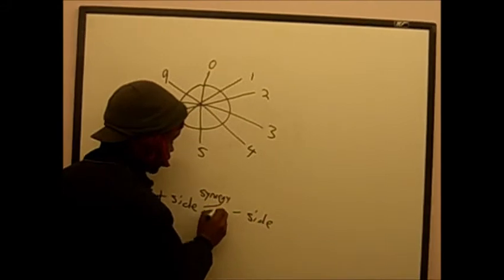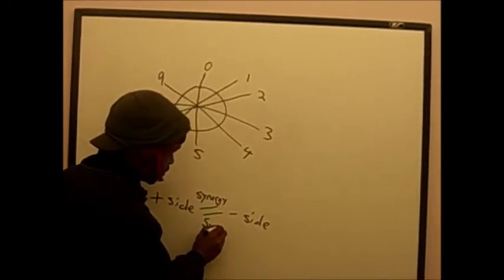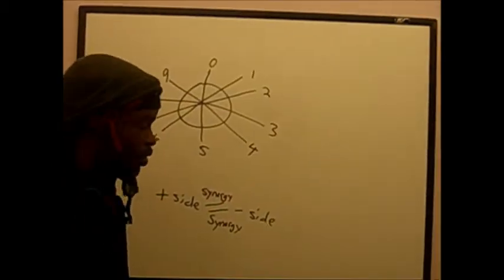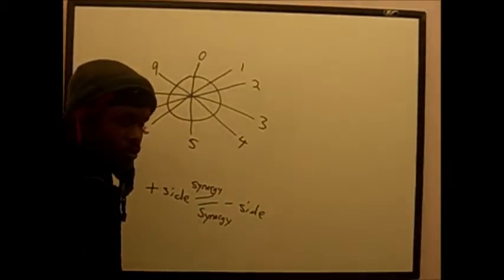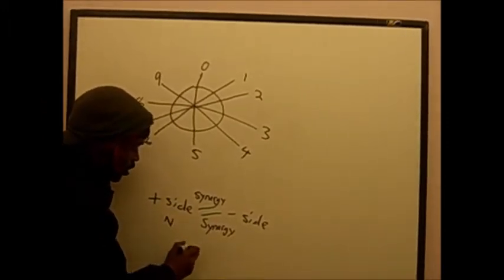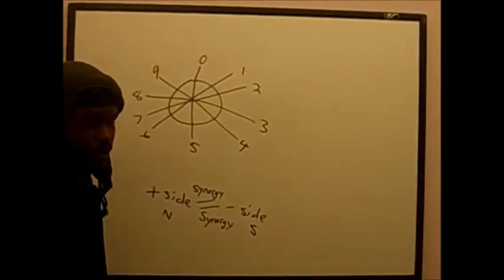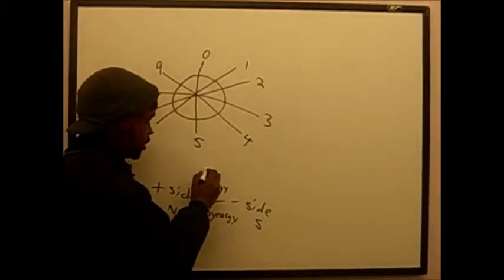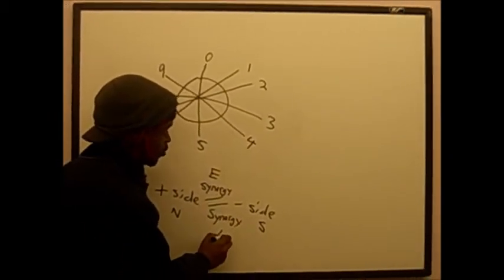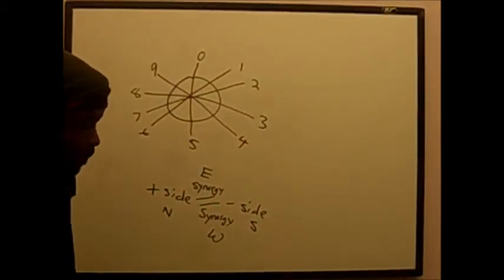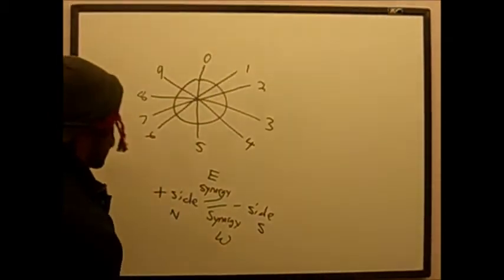You got one side which is the positive side, equal the negative side. What regulates them is the synergy in the middle. And the synergy represents unity and exchange of opposites. It regulates them, it's the flux between them.